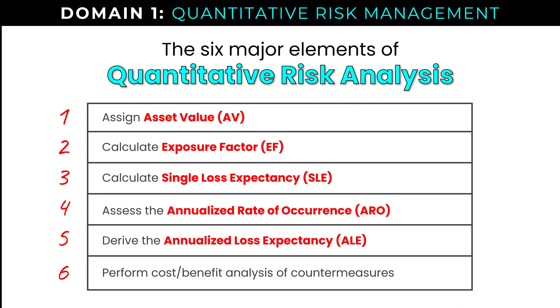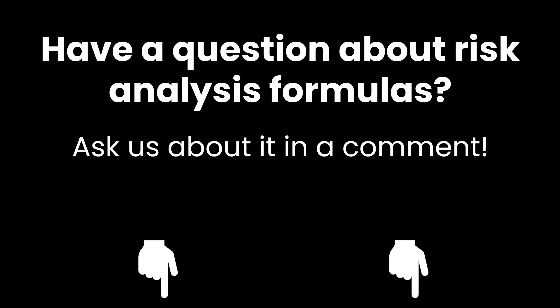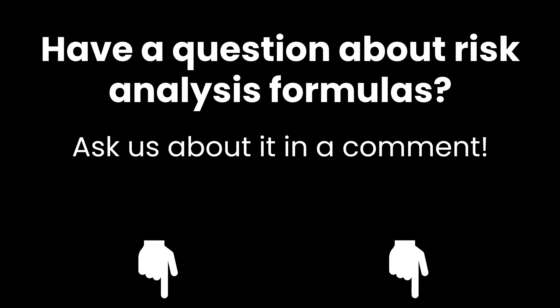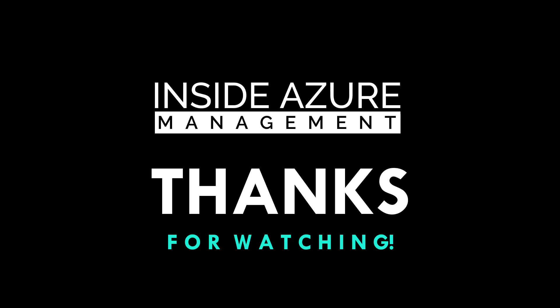I've now completed all the steps listed as required knowledge for the CISSP exam. What you've seen here is the math you need to do, how figures may be presented to you, and what information may not be presented to you — giving you context for how numbers may appear on the exam. If you have any questions about risk analysis formulas, ask in a comment — happy to cover any lingering questions. Give us a thumbs up if we're helping you out, hit the notification bell for new videos, and I'll see you in the next one.